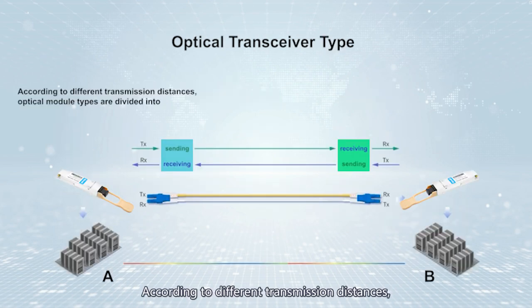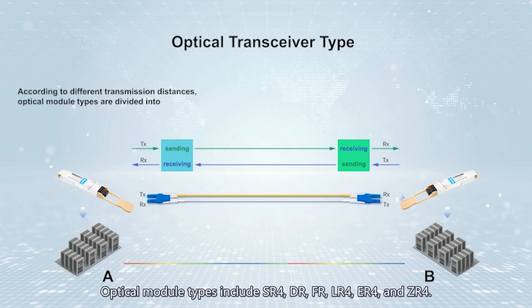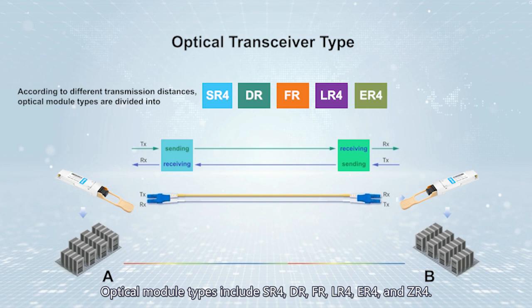According to the different transmission distance, optical module types include SR4, DR, FR, LR4, ER4, and ZR4.